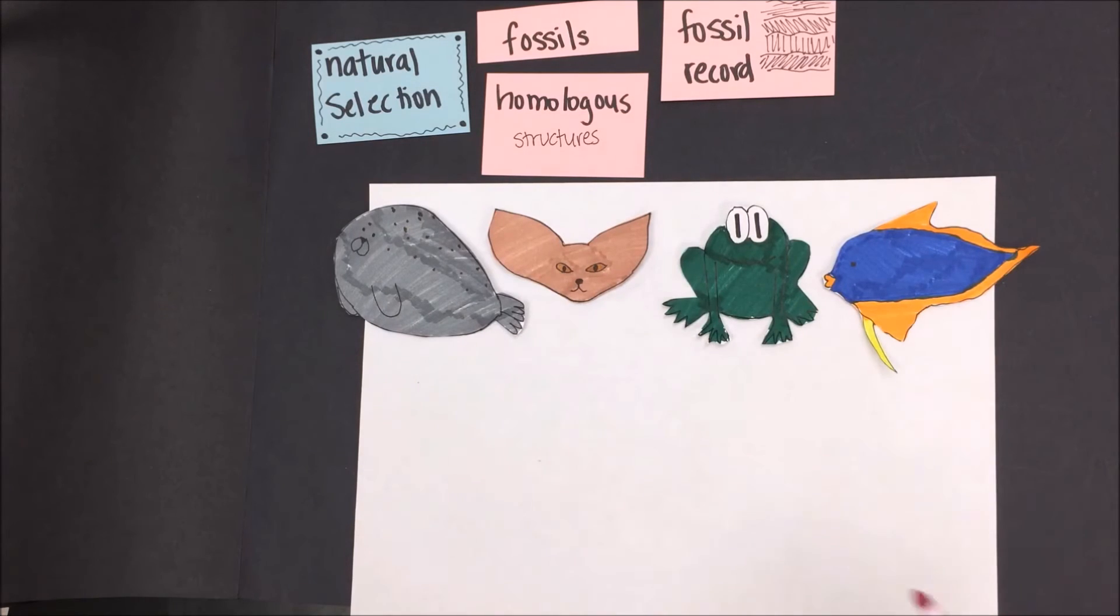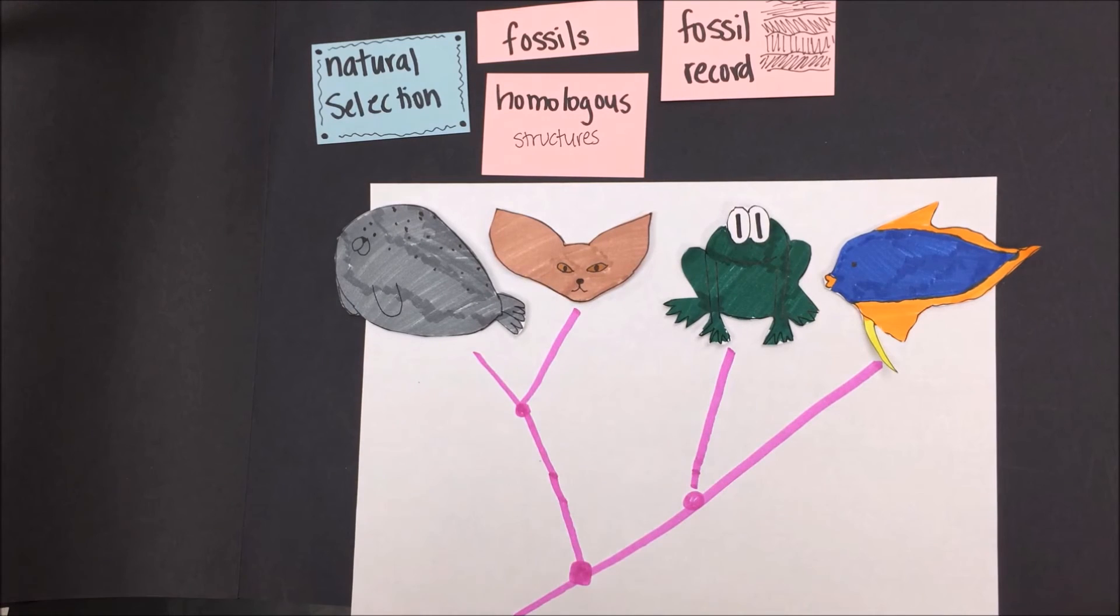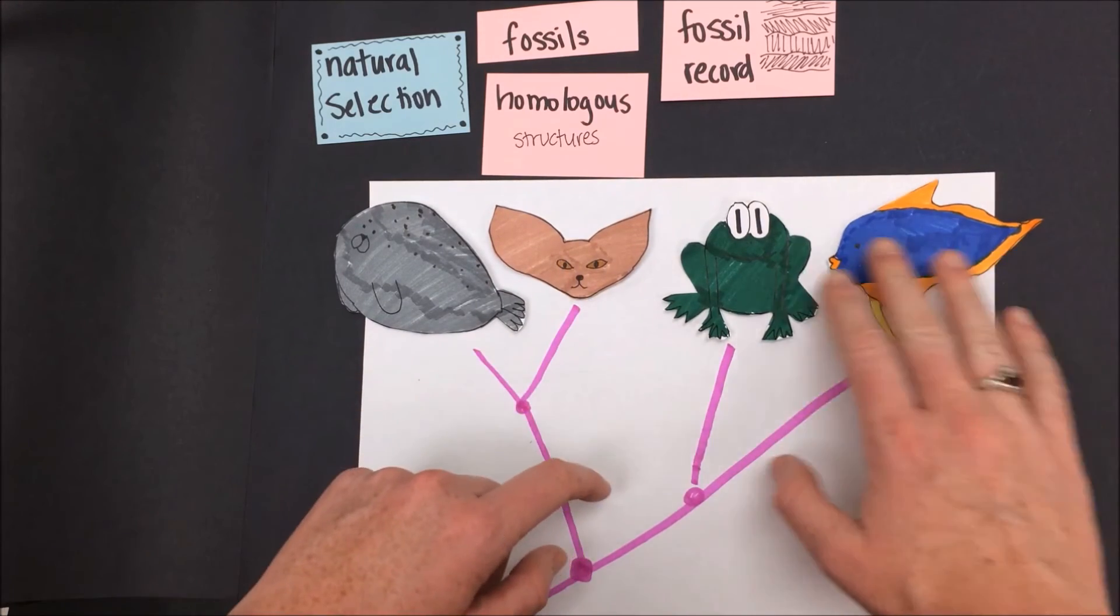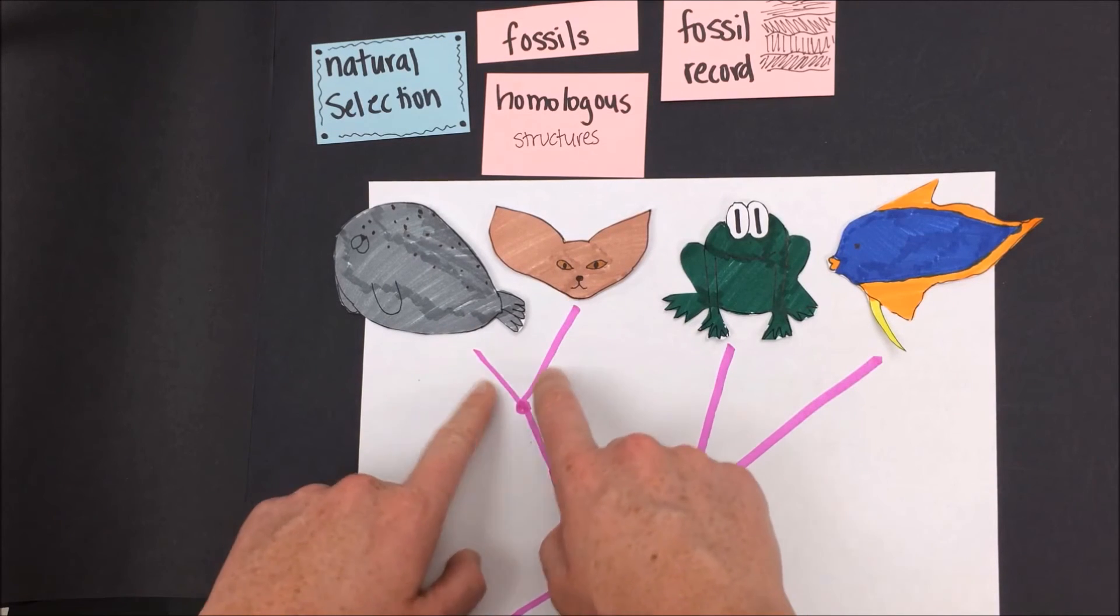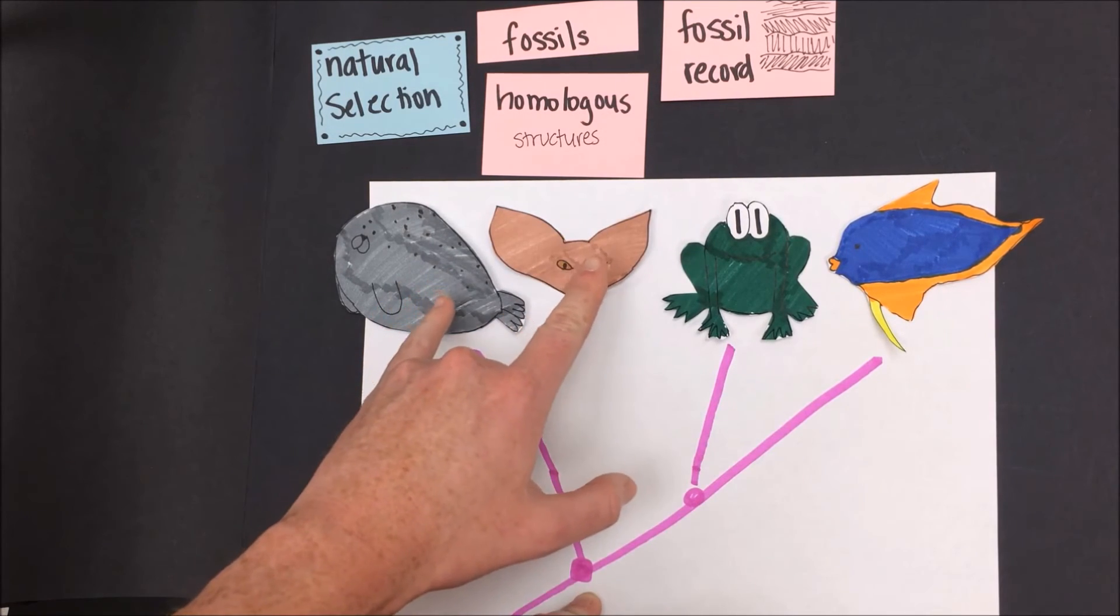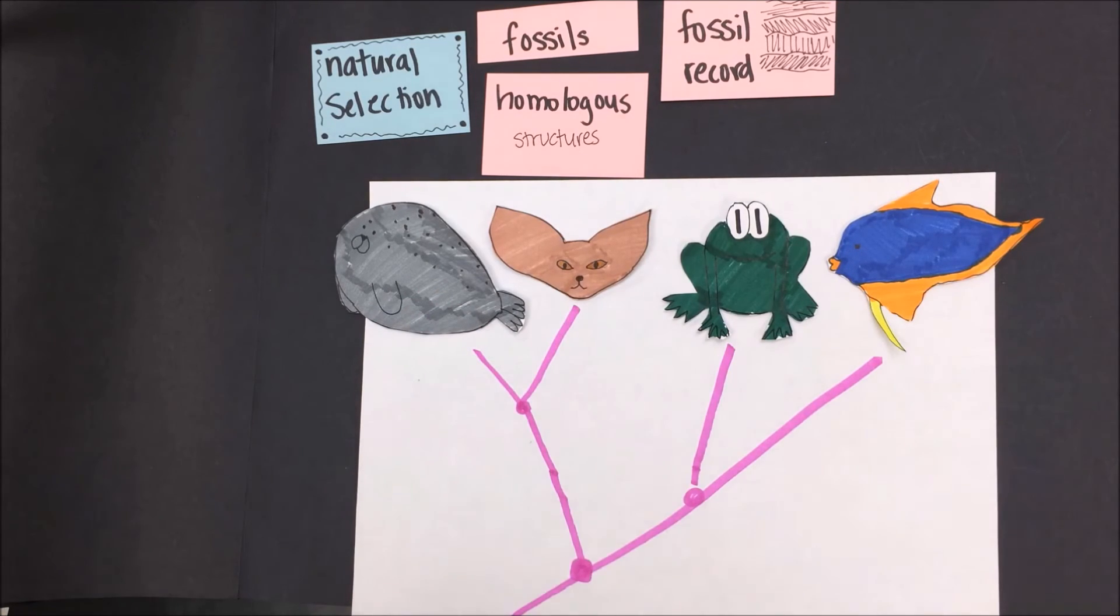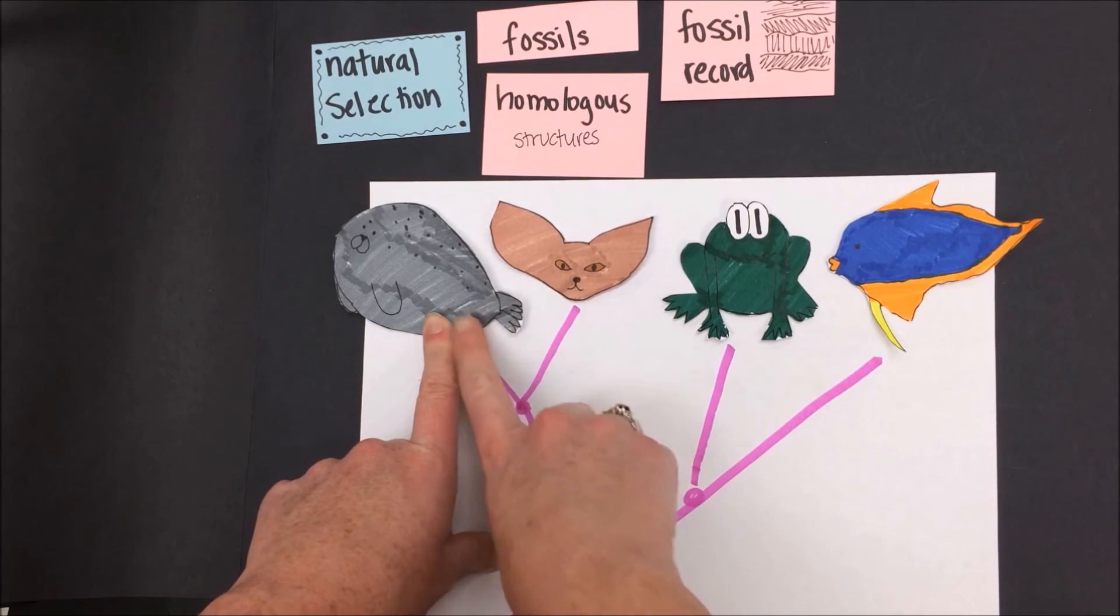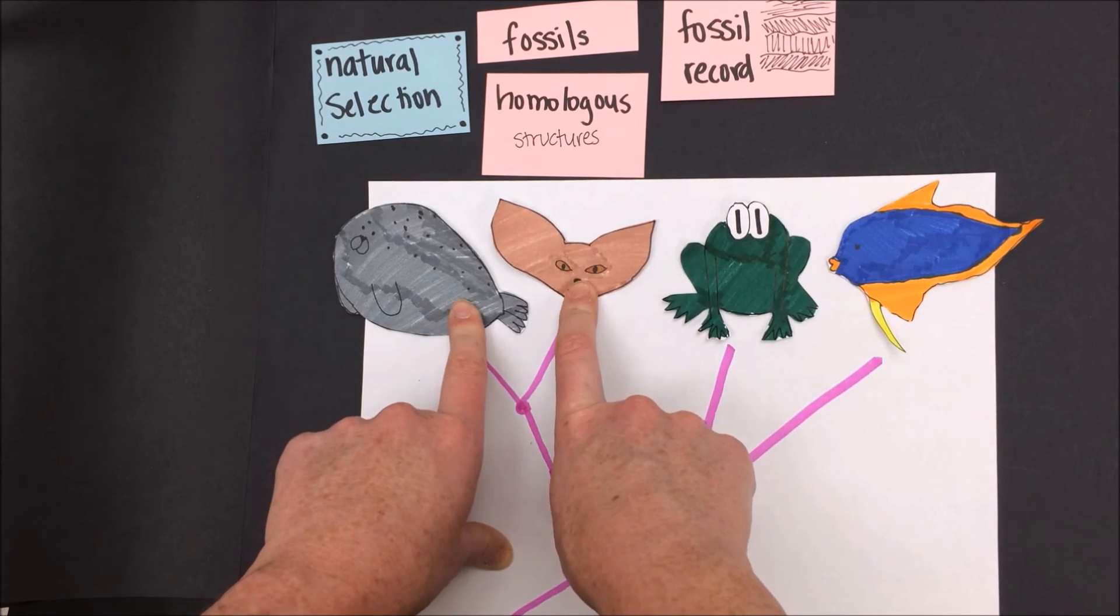Were we to draw a family tree, we would probably see something like this. That somewhere back in history, there's a common ancestor that differentiated itself into other ancestor species that led to fish, frogs, foxes, and seals. The closer these lines are on this family tree, the closer related these organisms are. Although this one is very rudimentary, it suggests that these foxes and these seals are more closely related than perhaps the seal and the fish. We know this is true because both of these organisms are mammals.